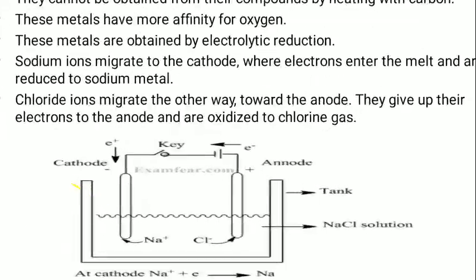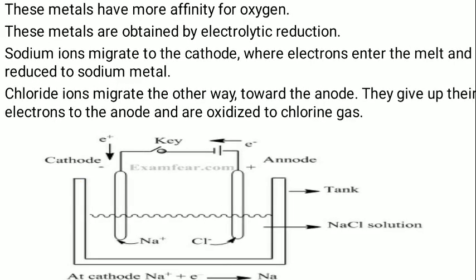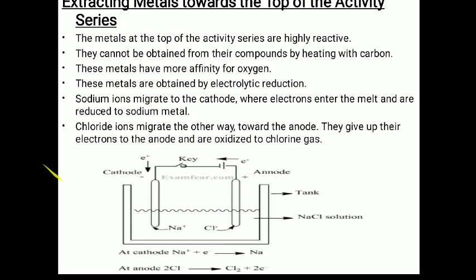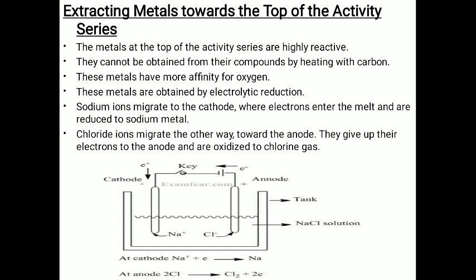In the electrolysis process, a beaker contains two electrodes — anode (positive) and cathode (negative). The beaker contains NaCl solution (brine solution). When current is passed, NaCl dissociates into Na⁺ and Cl⁻ ions. Na⁺ moves to the cathode and Cl⁻ moves to the anode. By this process we extract chlorine and sodium, and sodium metal is deposited on the cathode by reduction.